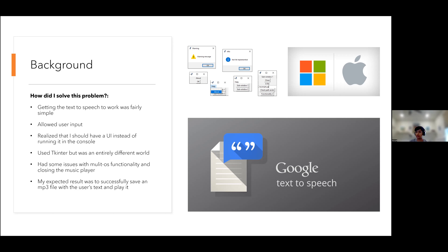I realized tkinter works completely differently, because tkinter uses something called a main loop, meaning it just keeps looping the program. That is what allows the text box to stay open so the user can enter any text, delete the text, or enter new text. After generating the speech, they can keep the window open and use the same button to generate new text. That was something I had to change about my code.